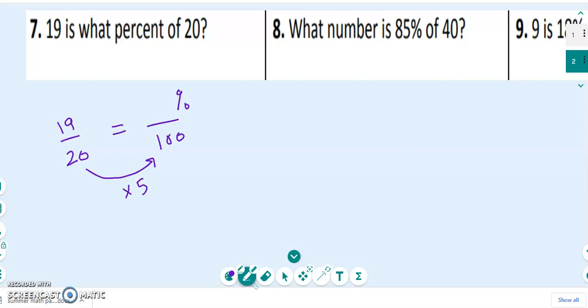Well, 20 times 5 is 100. And whatever you do to the bottom, you do to the top. So 19 times 5, that will give us a percentage. 5 times 10 is 50. 5 times 9 is 45. 50 plus 45 is 95.